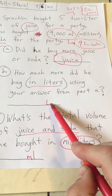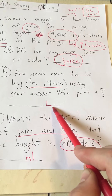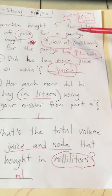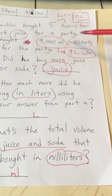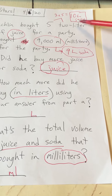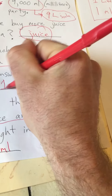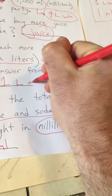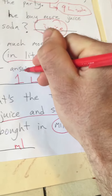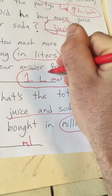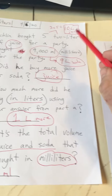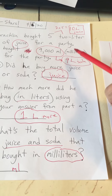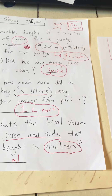Part B: how much more did he buy in liters? I already put an 'L' here to make sure the answer is in liters. From part A, I bought more juice. How many more liters is ten compared to nine? It is one more liter.